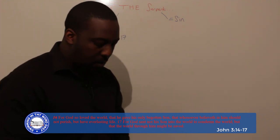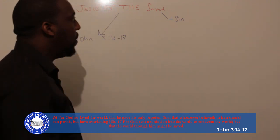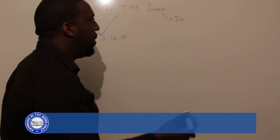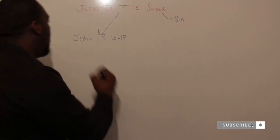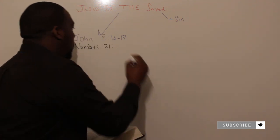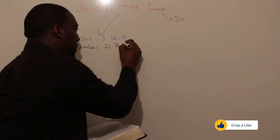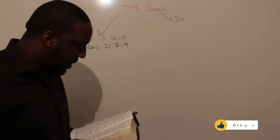We know the serpent going back to Genesis 3 is always a reference to sin. What we need to do next is get to Numbers 21, verse 7. So what does it say?